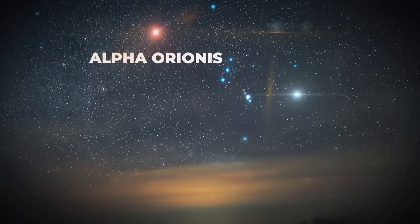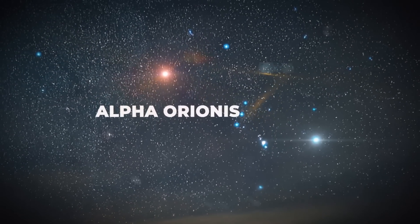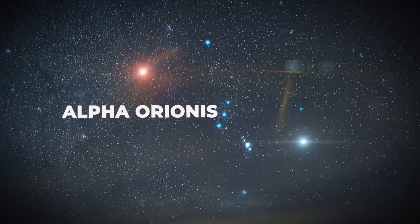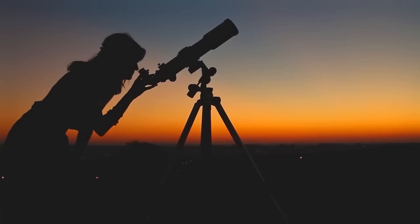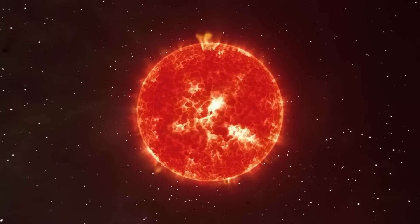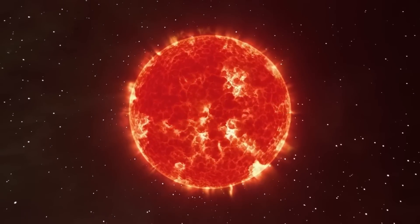It is also known as Alpha Orionis and it is the second brightest star in the constellation after the blue supergiant Rigel. Betelgeuse is an intriguing object for star studies and observations due to its variable nature, as well as its odd name.